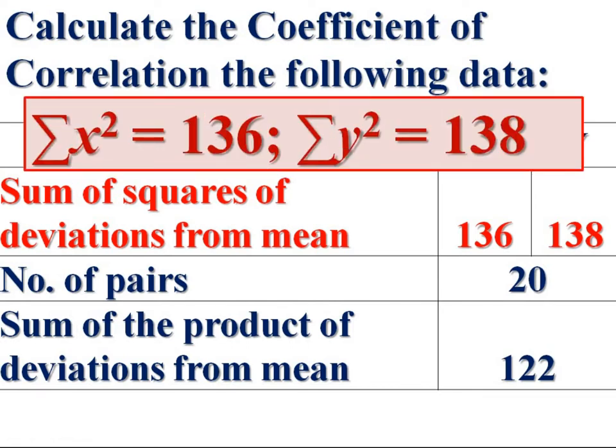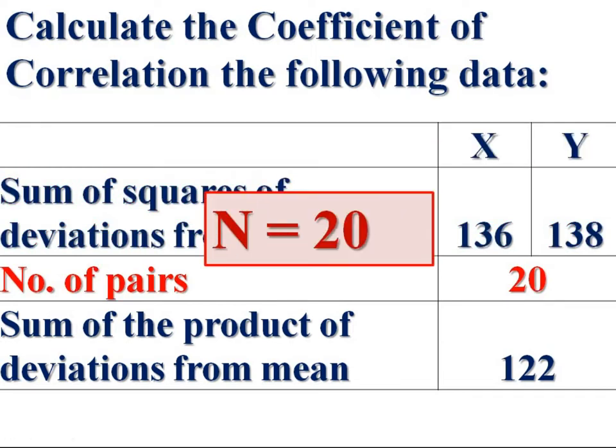Sigma x square equals 136 and sigma y square equals 138. The number of pairs, denoted as n, is 20.